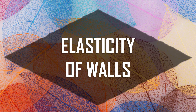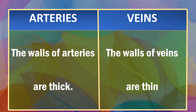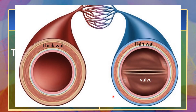Now, let's differentiate them on the basis of the elasticity of the blood vessel walls. The walls of arteries are thick to accommodate the high blood pressure, while the walls of veins are thin since the blood pressure is not that high. In this diagram, you can see the differences between the wall thickness of arteries and veins.